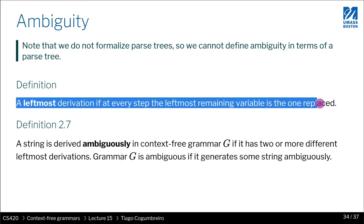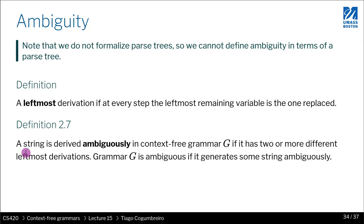So leftmost derivation is one definition. And then we say that a string is derived ambiguously if we can find two leftmost derivations that are different.